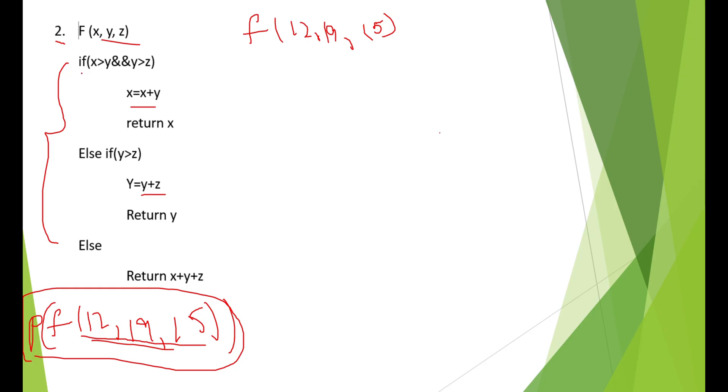If you look at this function now, first condition. It checks whether x is greater than y and y is greater than z. Both the conditions need to be true in order to execute this. Just check if x is greater than y. You can see that 12 is less than 19.